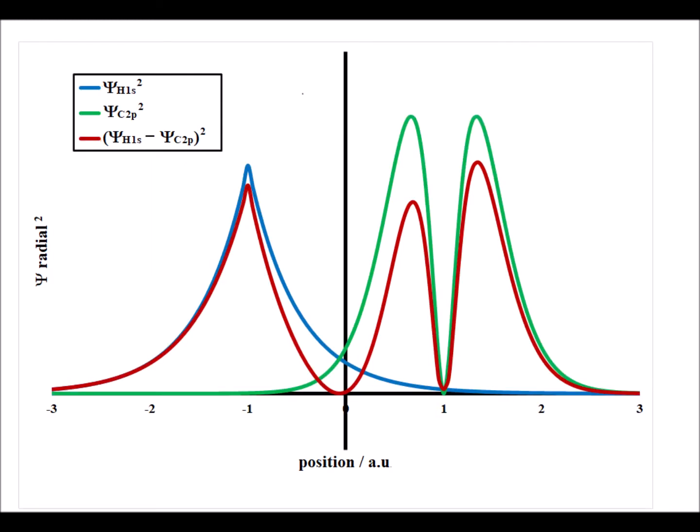We can think about the stability of a molecular orbital in terms of the electron density. Here we have in blue and green the atomic orbitals — 1s and 2p for hydrogen and carbon. The linear combination, that is the antibonding combination, is shown in red. We see a very big decrease in electron density; in fact we even have a node between the two nuclei. Therefore, this antibonding combination will destabilize the system.